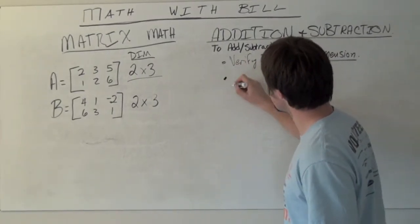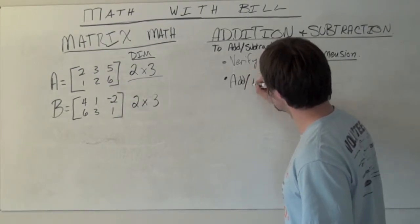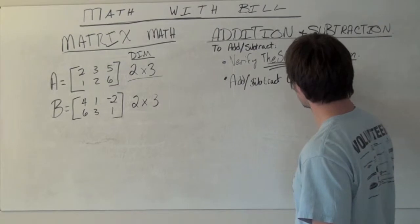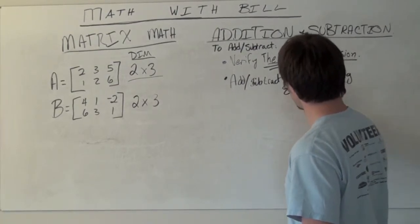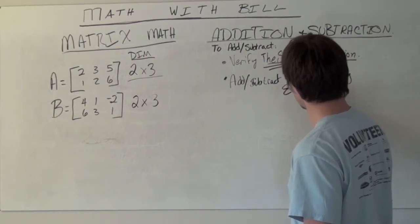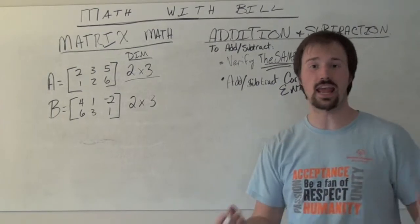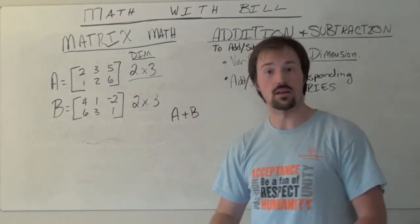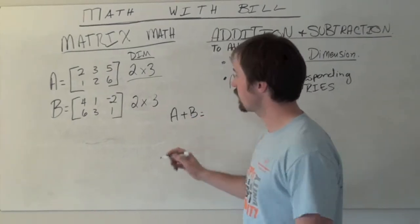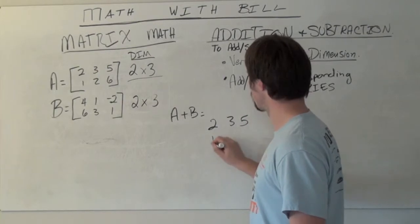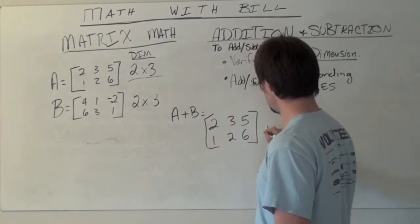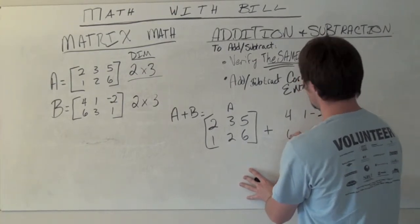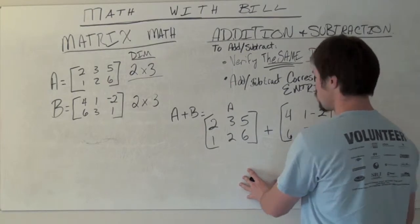The second piece of adding or subtracting is to add or subtract, whichever is appropriate, corresponding entries. An entry is any one of our specific locations. Let's look at A plus B. The A plus B matrix is our A matrix: 2, 3, 5; 1, 2, 6, plus the B matrix: 4, 1, negative 2; 6, 3, 1.